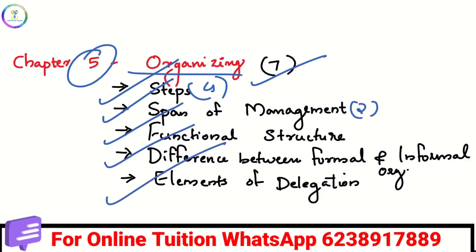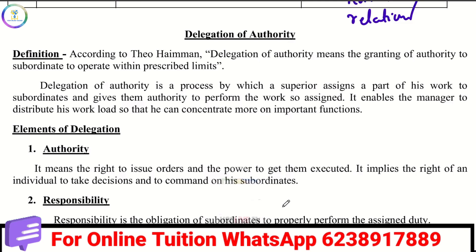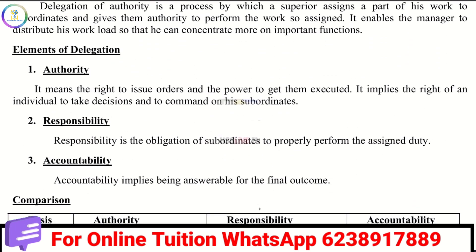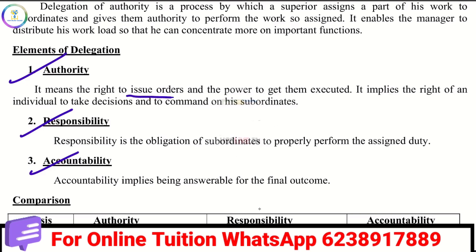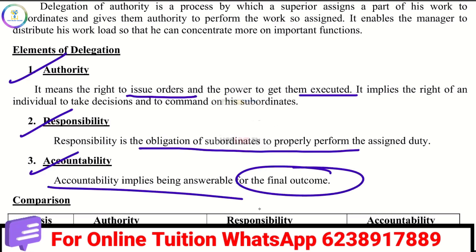Another important question is the elements of delegation. Delegation has three elements: authority, responsibility, and accountability. Authority is the right to issue orders. Responsibility refers to the obligation of a subordinate to carry out the superior's orders. Accountability is the answerability for the final result — you are answerable for the outcome.